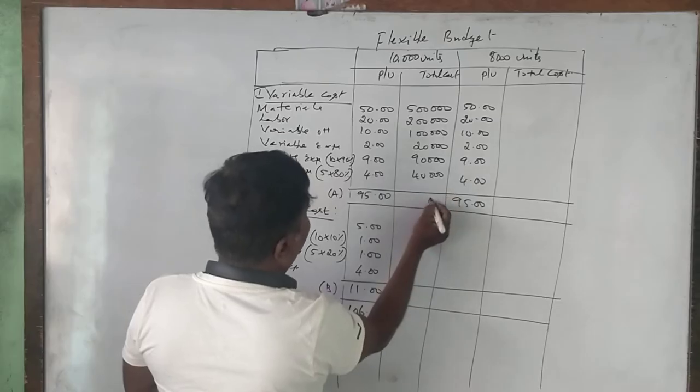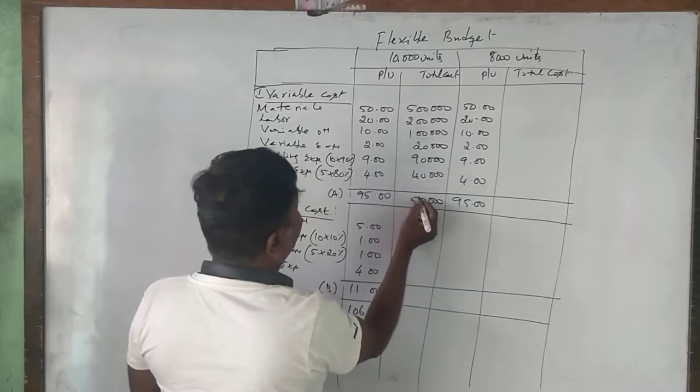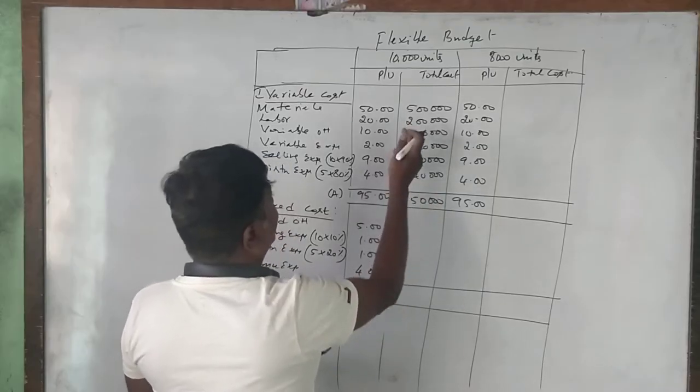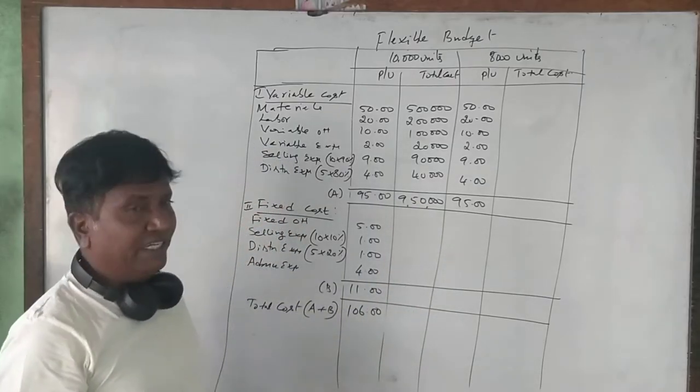The total comes to 9,50,000 units — this is the total variable cost for 10,000 units production.